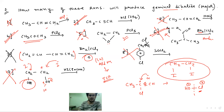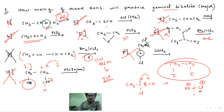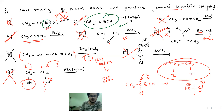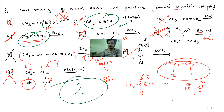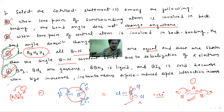Our choice was: the first one — geminal dihalide was not going to be made. The second one — yes, this is our choice, green mark. Two reactions give geminal dihalide, so our answer is 2. For the previous chemical bonding question, the answer is B and C. You must comment whether your answer was correct or not. Let's see the next video.